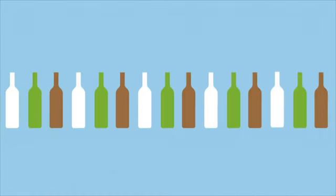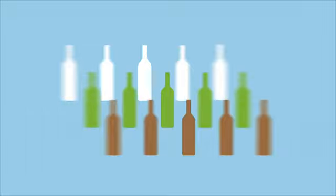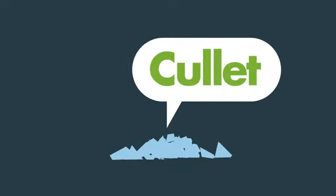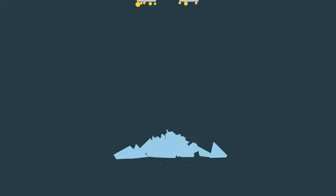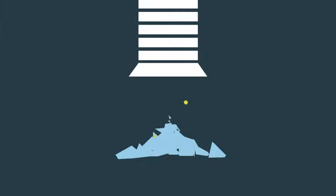After bottles are collected, separated from other waste and sorted by colour, they arrive at the reprocessing factory and are crushed into small pieces called cullet. Contaminants are removed from the cullet using magnets, air suction and laser sorters.